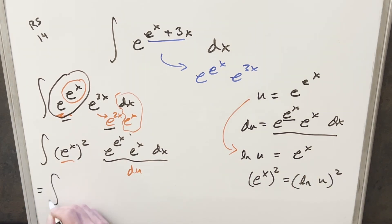So going ahead with it, let's just rewrite everything. This is going to become ln u all squared, and this is just du.